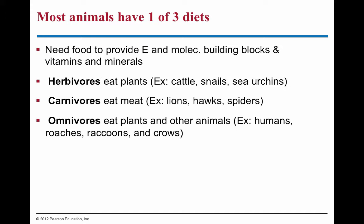There are three main dietary categories of animals: herbivores, carnivores, and omnivores. Herbivores are plant-eating organisms, carnivores are meat-eating, and omnivores eat both plants and meat on a regular basis.